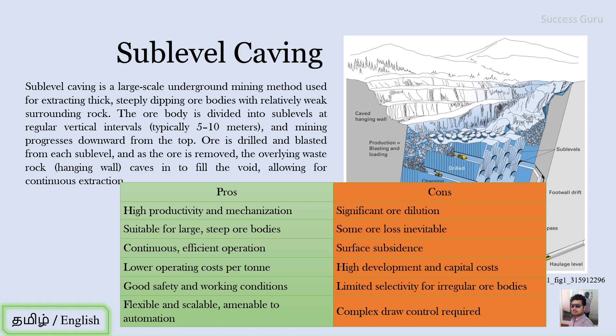Now for the disadvantages. First, there is significant ore dilution — when blasting, there is a chance of breaking the country rock, which is comparatively weak and moves down the slope, increasing dilution probability. Second, some ore loss is inevitable; a portion of the ore body that is removed is lost forever.